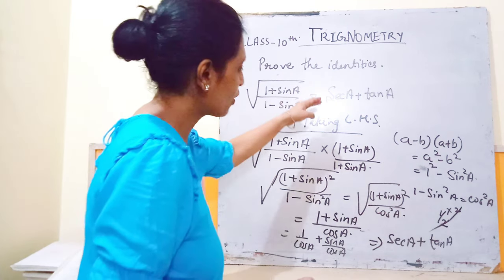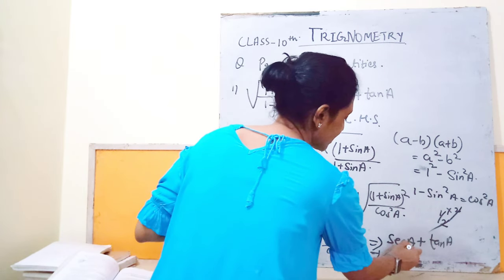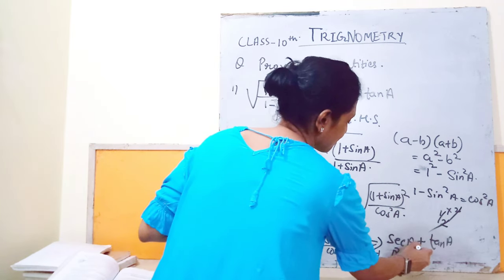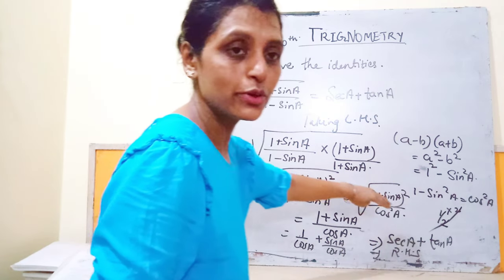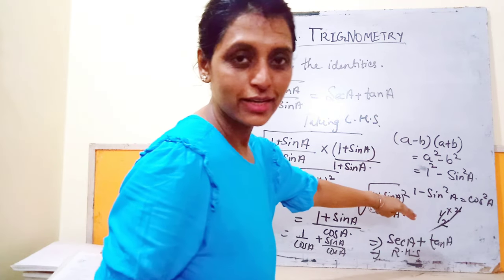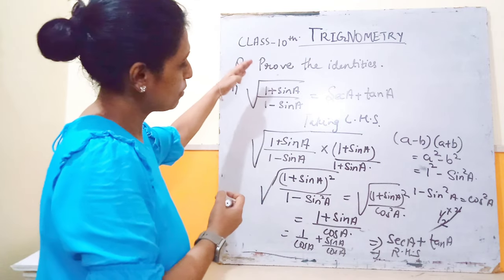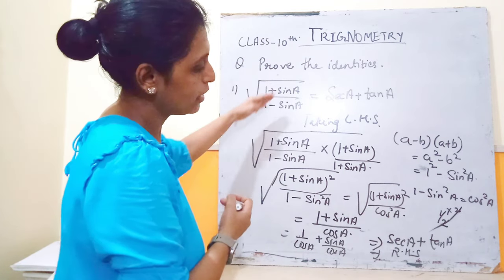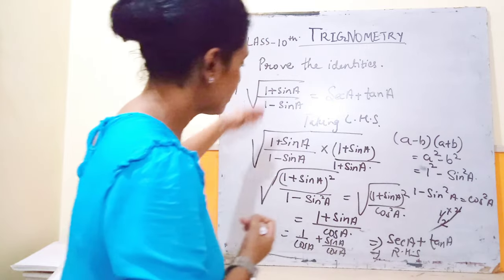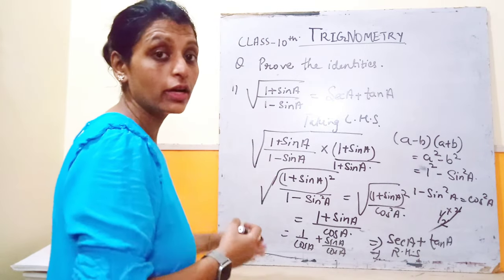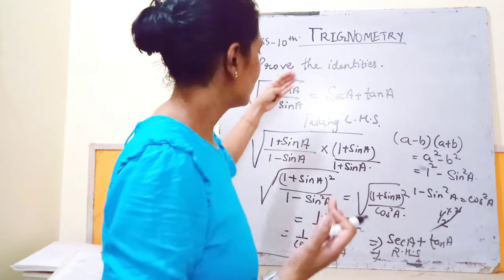And hence we got the right hand side, so left hand side is equal to right hand side. This is one of the ways to prove identities — you can take the left hand side and prove the right hand side, or take the right hand side and prove the left hand side, or work both sides simultaneously.